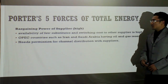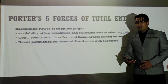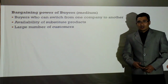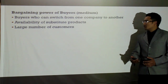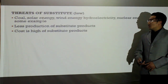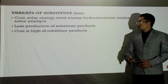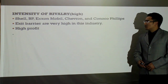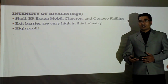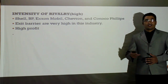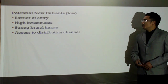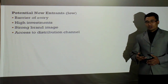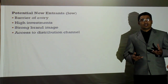Moving to Porter's Five Forces model of Total Energy: bargaining power of supplier is high because of fewer substitute products. Bargaining power of buyer is medium because buyers can switch from one company to another and there are also a large number of customers. Threat of substitutes is low because of less production of substitute products and higher costs of substitutes. Intensity of rivalry is high because of high profit and other companies competing for the same market. Potential of new entrants is low because of high investment and the need for a strong brand image.